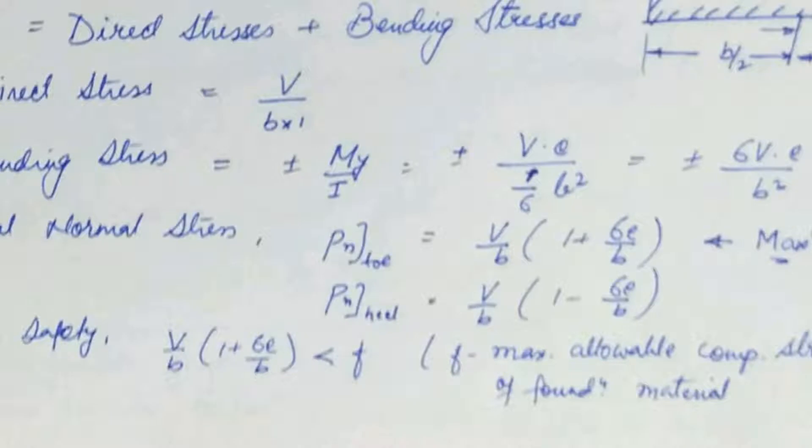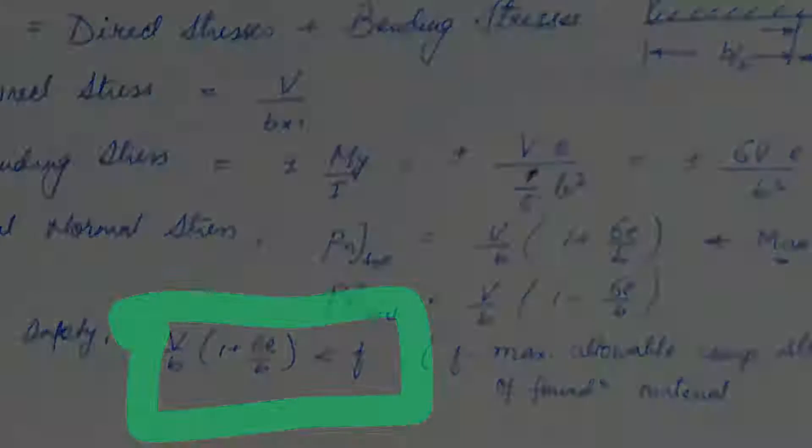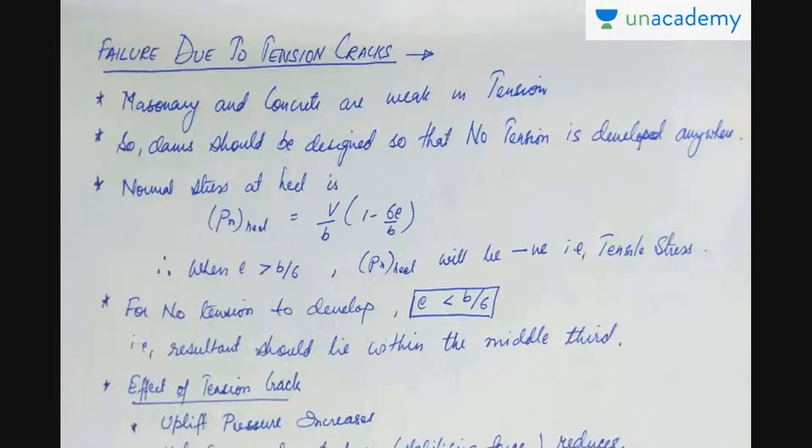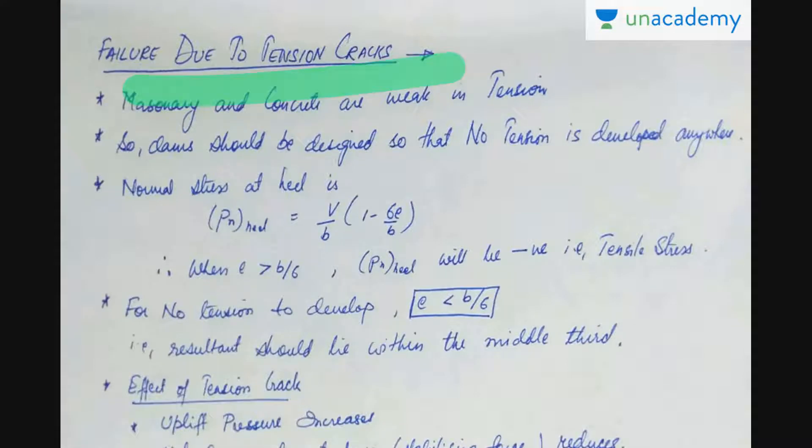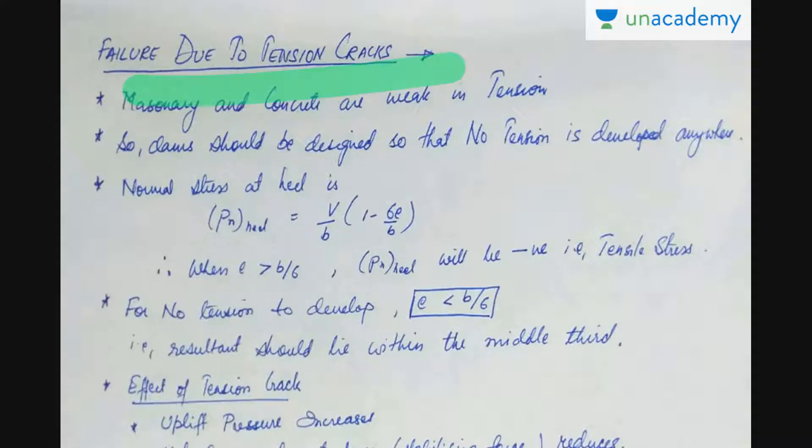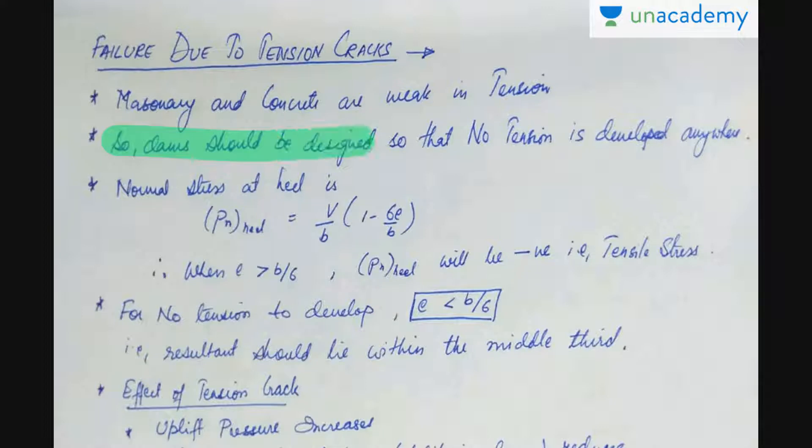So from that, what we get this relation for our structure to remain safe, we have V upon B multiplied by 1 plus 6 E by B is less than F. Now let us see the failure due to the tension cracks.